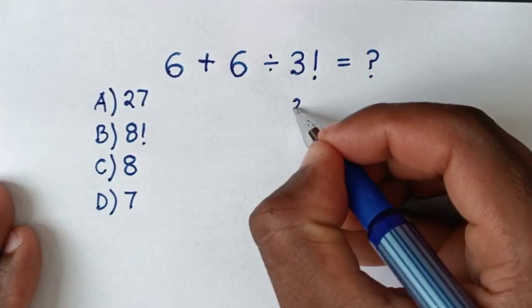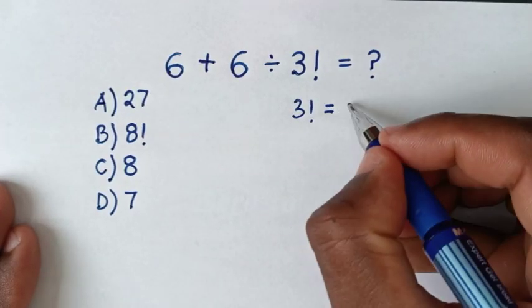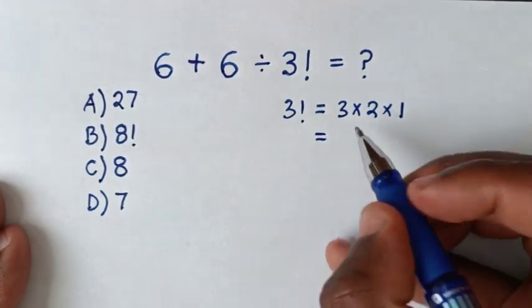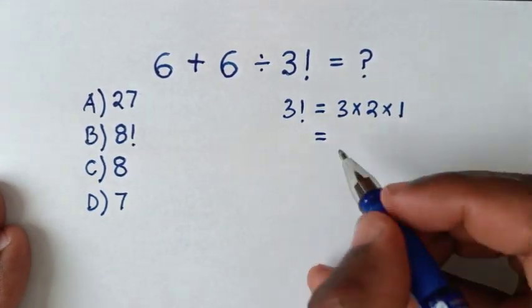Now from 3 factorial is equal to 3 times 2 times 1 whereas 3 factorial is equal to 3 times 2 is 6, 6 times 1 it is 6.